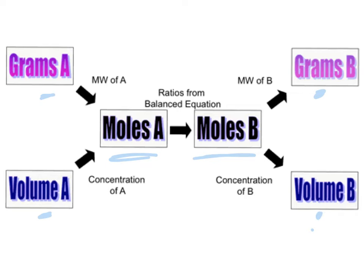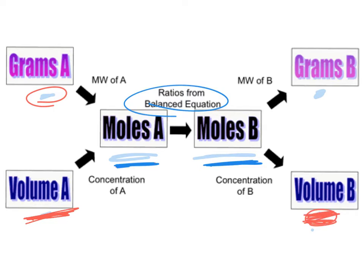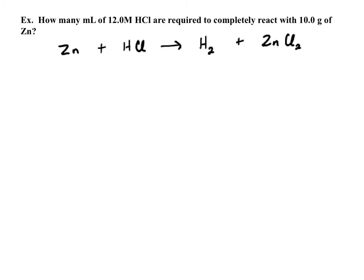So let's do some examples. We're starting in grams and we need to end in volume. We need to convert to moles of zinc, then moles of HCl, and finally milliliters of HCl. We know we have to go from moles of zinc into moles of HCl through the balanced equation. Remember, before we start anything else, we need a balanced equation.